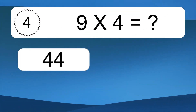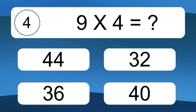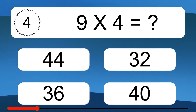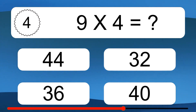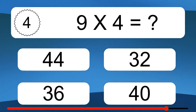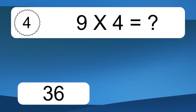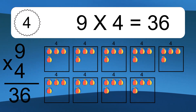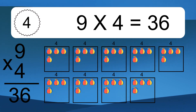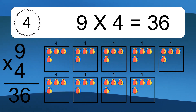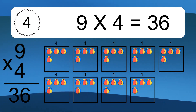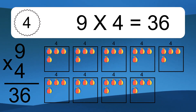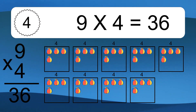9 times 4 equals what? 9 times 4 equals 36. We have 9 boxes, and each box has 4 colorful balls inside. If you count all the balls in all the boxes together, you will have 9 times 4 balls. This equals 36 balls.